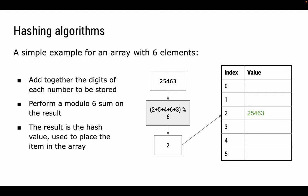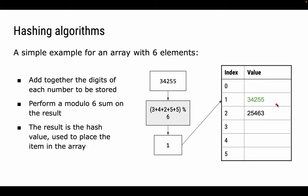Here's a very simple example of a hashing algorithm. It takes an integer, splits it into individual digits, adds them together, then mods the result by the size of the available array. So for 25463, we add 2+5+4+6+3, mod by 6 — result is 2, so we store that value at index 2. For 34255, the algorithm spits out 1, so we store it at location 1.